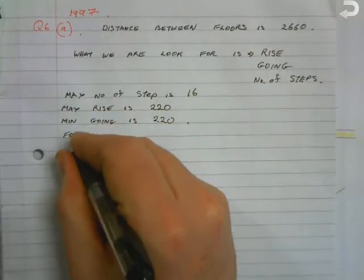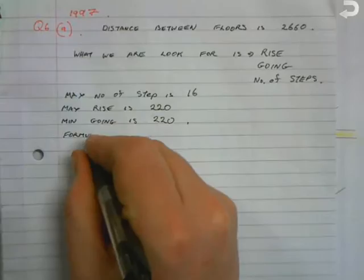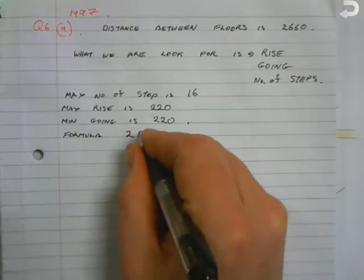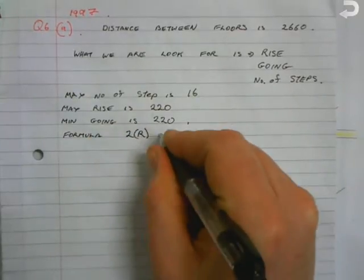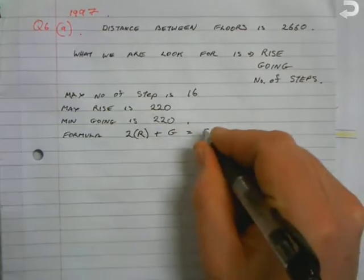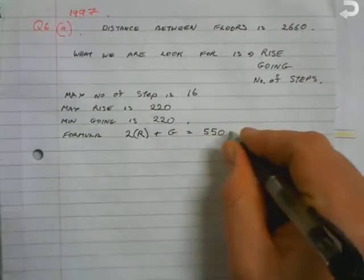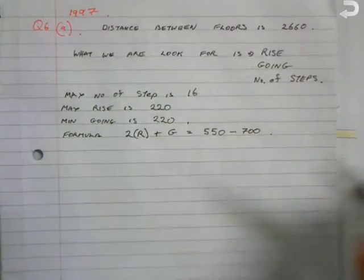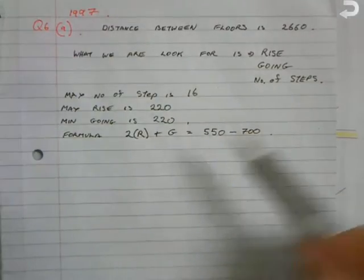And then the final piece of information that we know is the formula for stairs. So the formula for stairs that it must comply with is twice the rise plus the going is equal to 550 to 700.